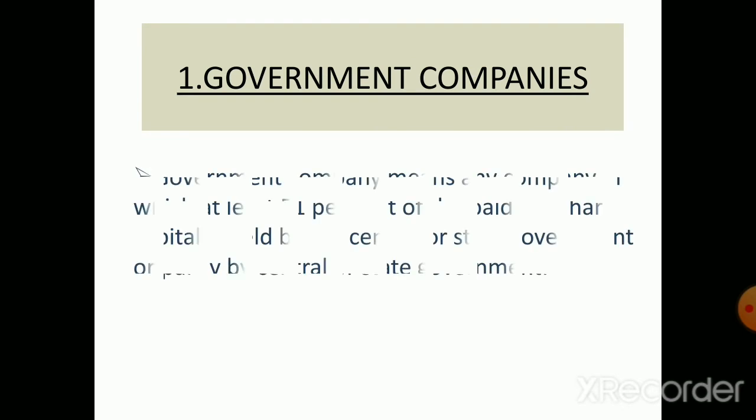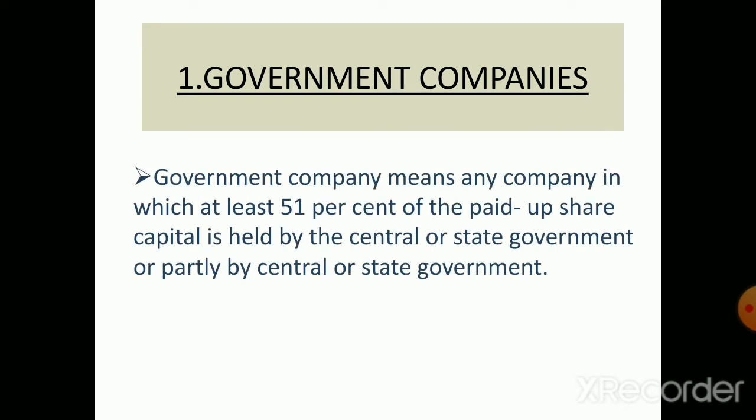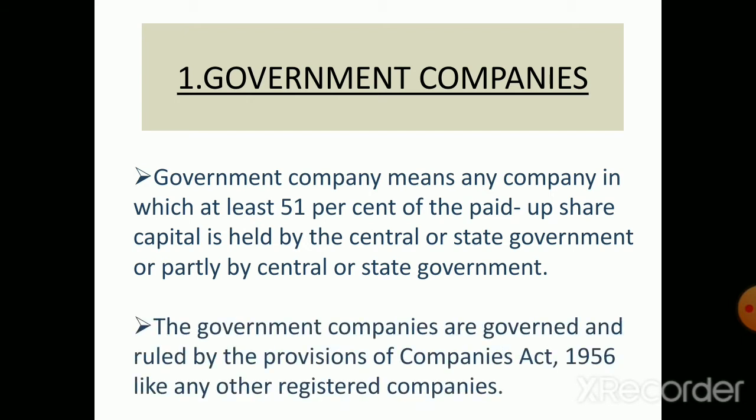In this session we'll be discussing the third type of public sector enterprises: government companies. A government company means any company in which at least 51% of the paid-up share capital is held by the central or state government, or partly by both. Government companies are owned and governed by the provisions of the Companies Act 1956. Examples include Steel Authority of India, State Trading Corporation, and Hindustan Machine Tools.